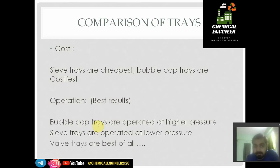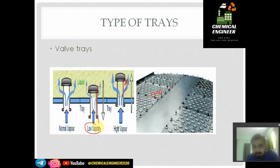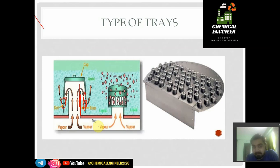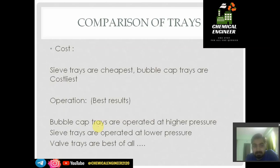Now let us do a small comparison. From the point of view of cost, the sieve tray is the cheapest because it has no mechanism — just simple holes. The bubble cap tray is the costliest one, because creating the cap arrangement requires engineering effort, which makes it expensive. Valve trays fall in between.